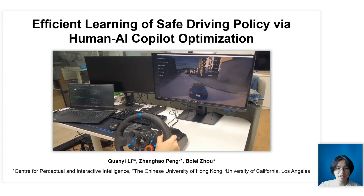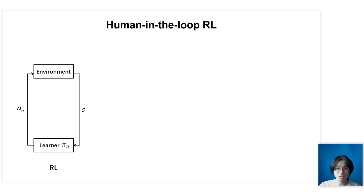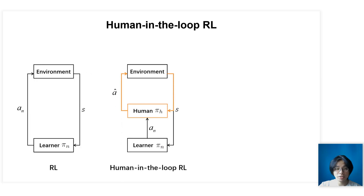Before discussing the technical details, let's talk about human-in-the-loop reinforcement learning. In the reinforcement learning loop, the learning agent with policy PiN makes decisions and receives feedback like next state from the environment. Human-in-the-loop RL is achieved by enabling a human to intervene in the exploration and replace the action of the agent — PiH denotes the human's policy. When the intervention happens, the behavior action applied to the environment will be a_H instead of a_N.